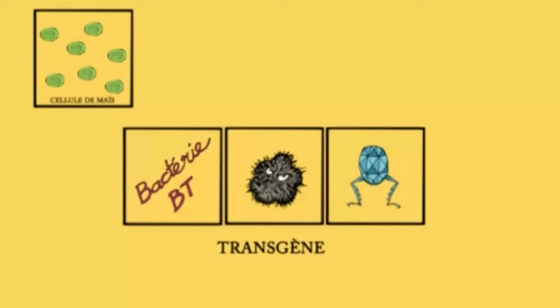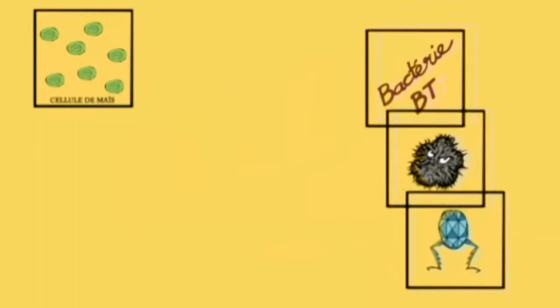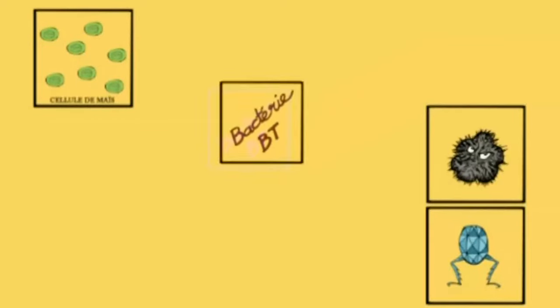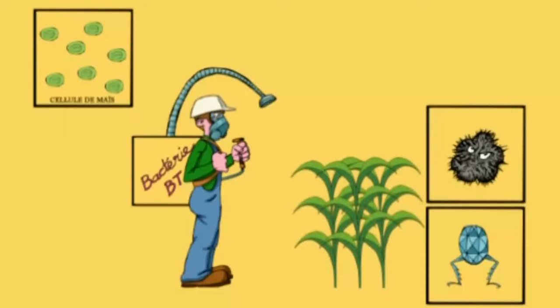C'est un collage de gènes qu'on veut ajouter dans l'ADN du maïs. Le premier gène vient d'un Bacillus thuringiensis. C'est ça, le Bt.